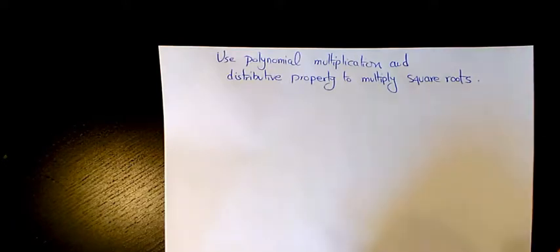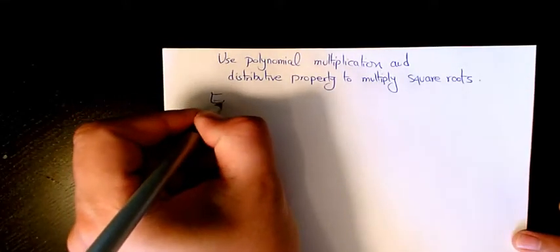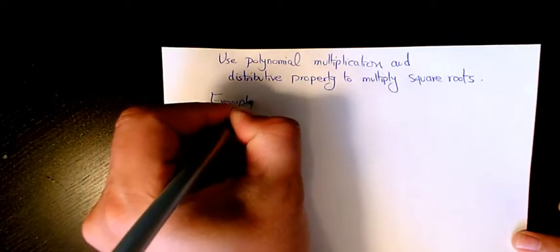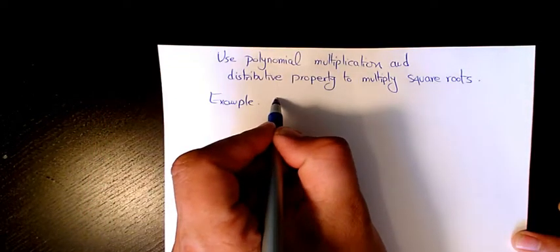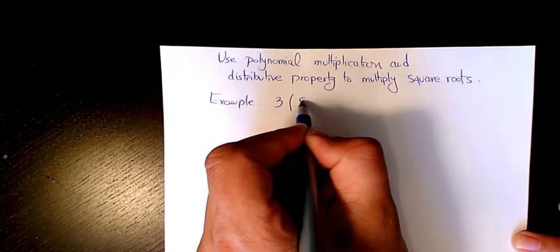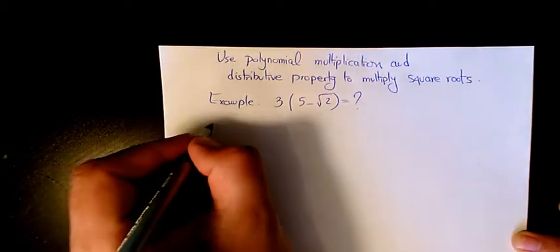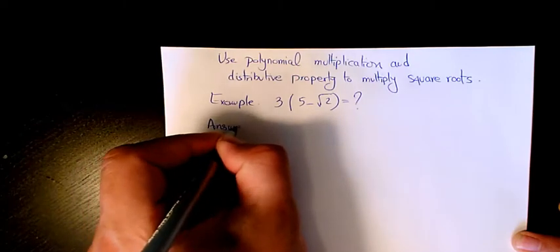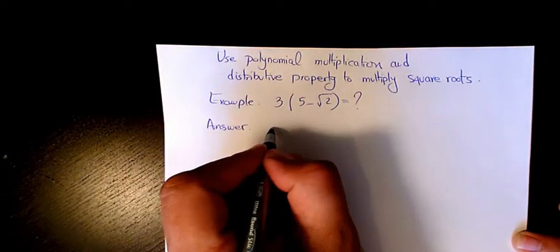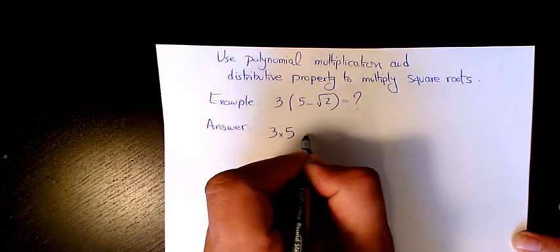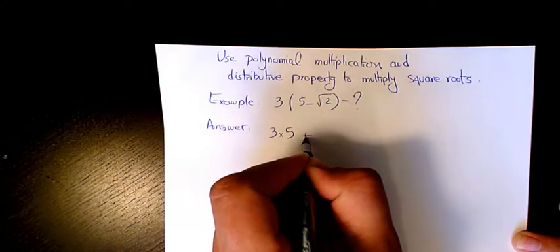First example is 3(5 - √2). The answer is gonna be 3 times 5 plus 3 times negative √2.